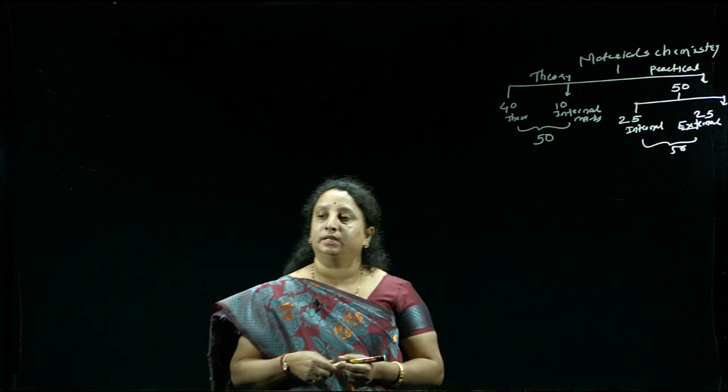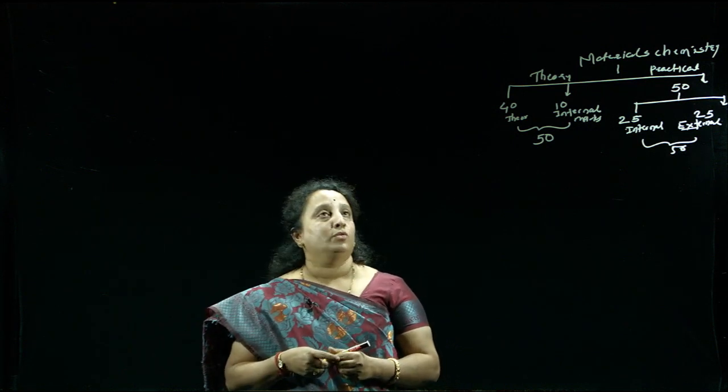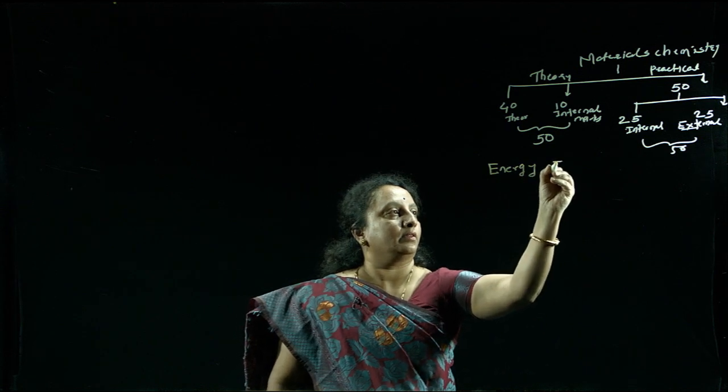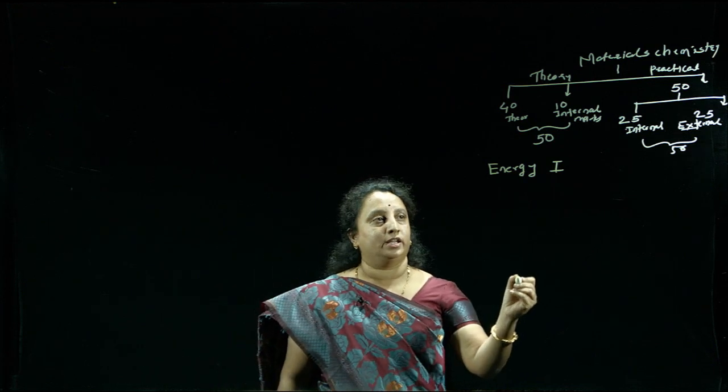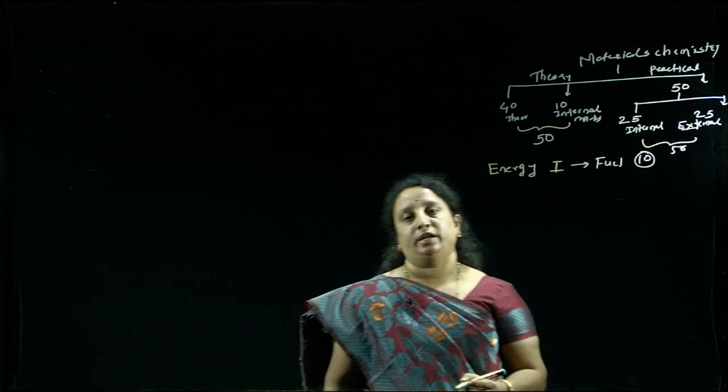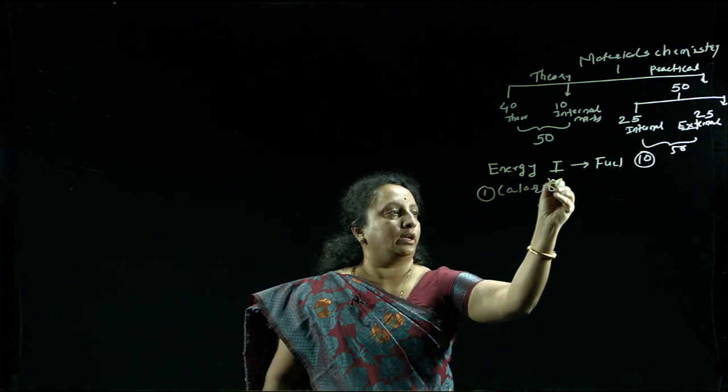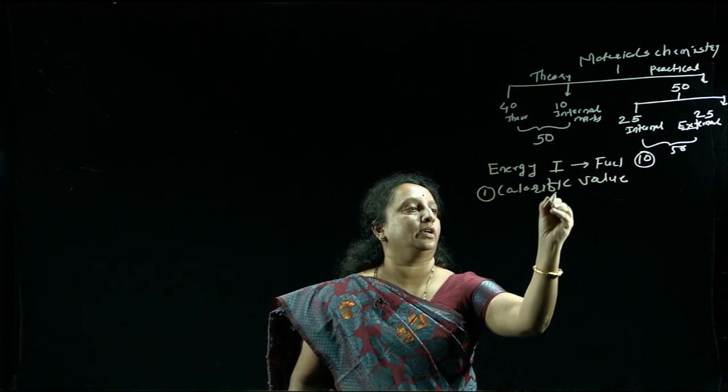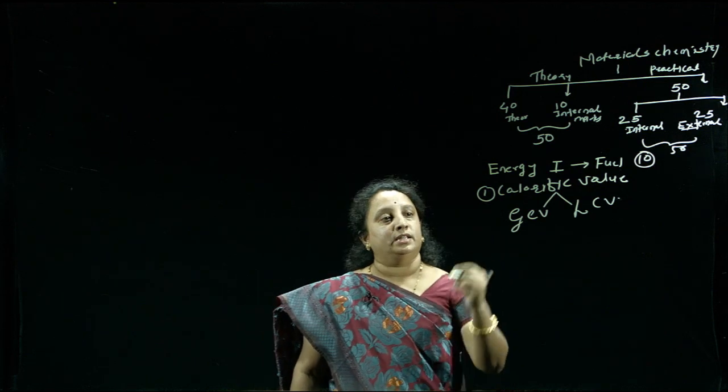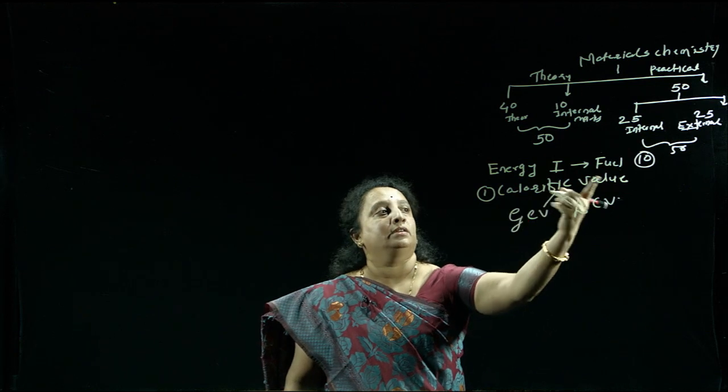Now we will discuss the syllabus of materials chemistry. There are 4 units in your syllabus. Unit number 1 is Energy 1. Energy 1 is related to fuel, and total weightage for this unit is 10 marks. In this unit, we will discuss the calorific value, and this calorific value is again divided into GCV and LCV. In next lecture, we will discuss about this. What is calorific value, what is GCV, what is LCV, we will discuss in detail. Calorific value is related with fuel.